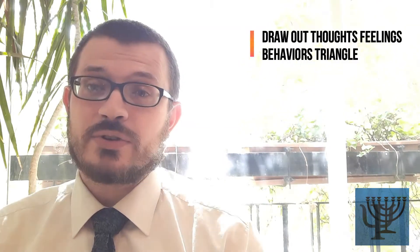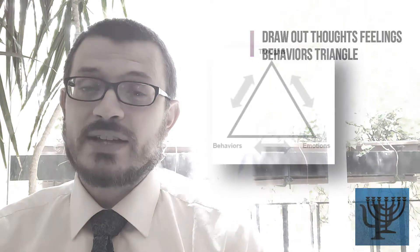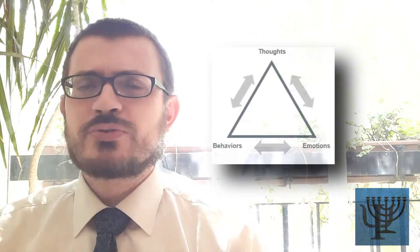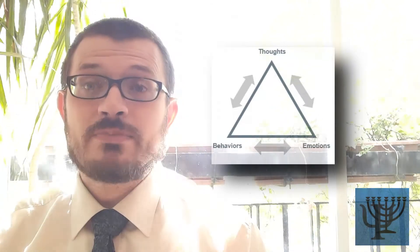When going through this sort of psychoeducation with your client, it helps to actually draw out the triangle of thoughts, feelings, and behaviors to have a reference point as you describe this idea. Basically what you're trying to get across is that these things are independent from one another. Now that's a bit of an abstraction, it's not true, but it's functionally true and that's really what's most important here.